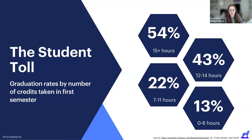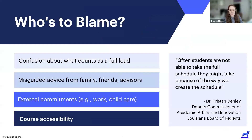This really begs the question: if we know that the number of credits students take in their first year has such a large impact on their ability to graduate, why aren't more students taking a full load? There isn't just one cause. Many students might not even know what counts as a full load. While students need to take 15 credits a semester to graduate on time, federal financial aid only requires 12 credits a semester to maintain full-time status. This might mislead some students into thinking 12 credits is sufficient.